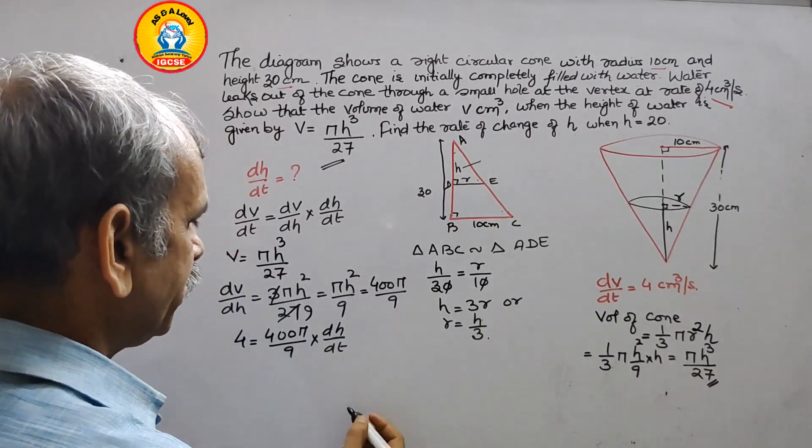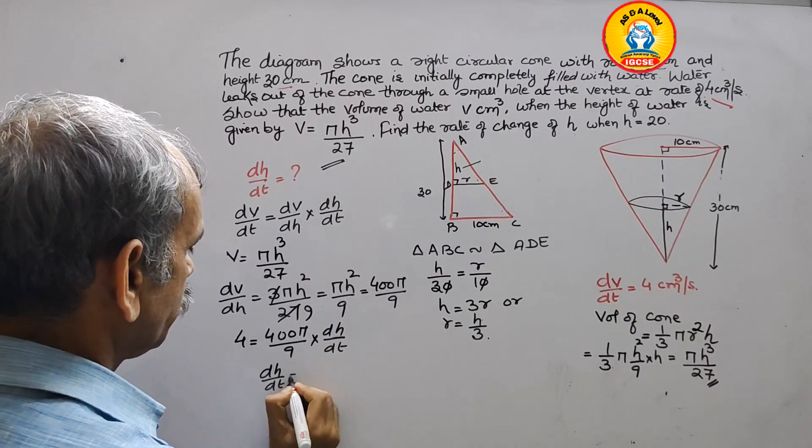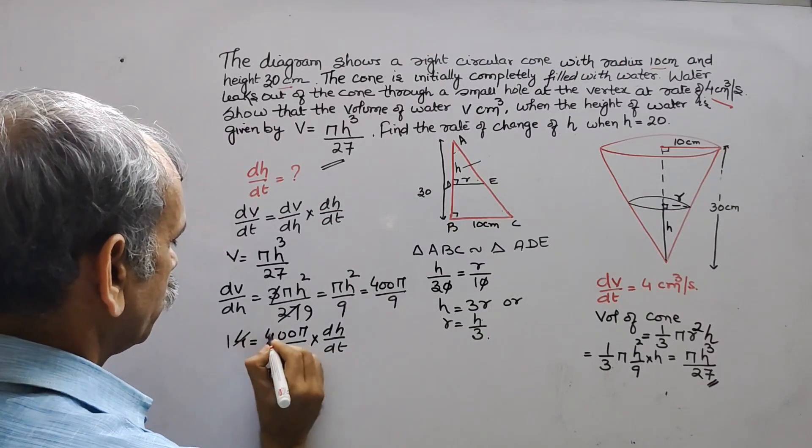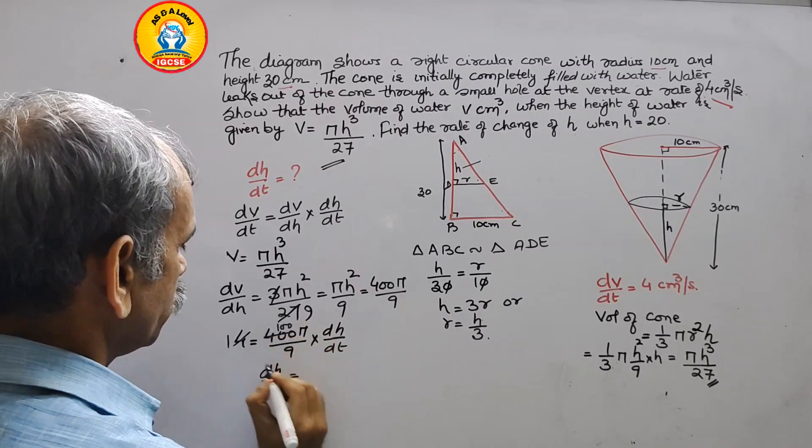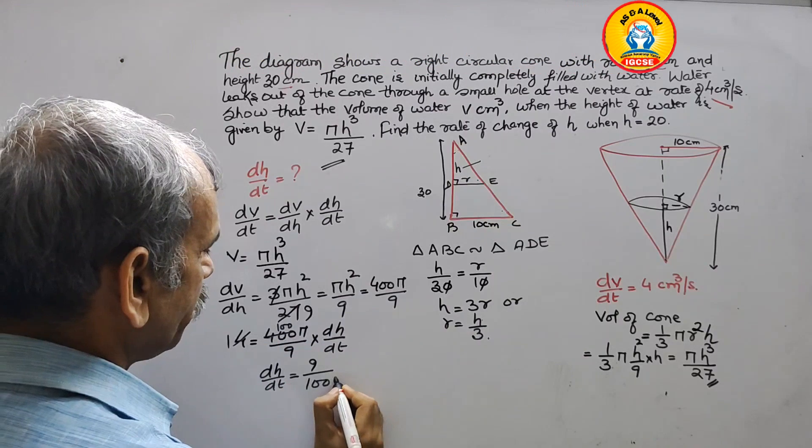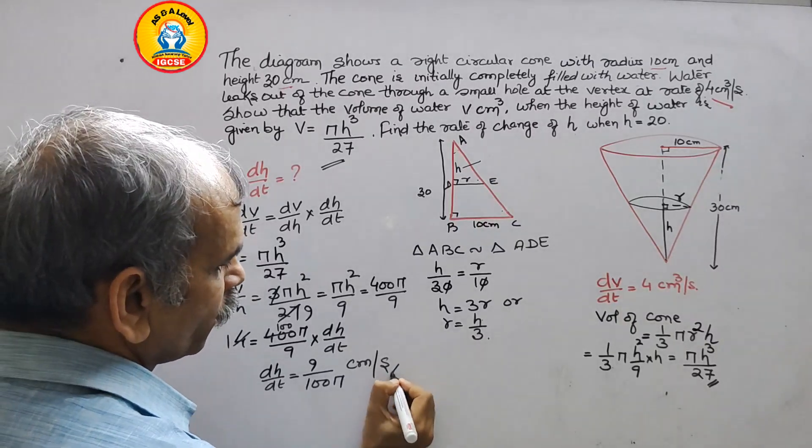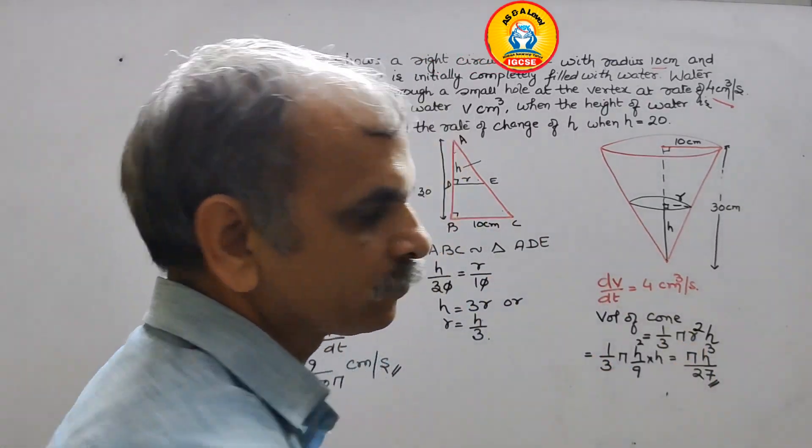So what is your dh/dt? dh/dt is equal to this 4 will go and this 100 will go. So now it will be 9/100π cm per second. So this is the answer for this question.